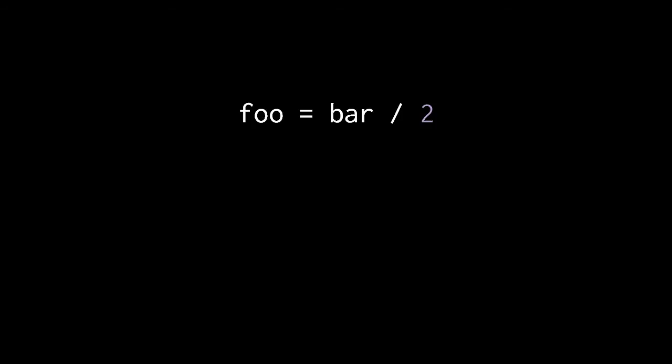For example here, the division operator has a higher precedence than the assignment operator, so the division here is done first. So bar divided by two, that value is assigned to the variable foo.